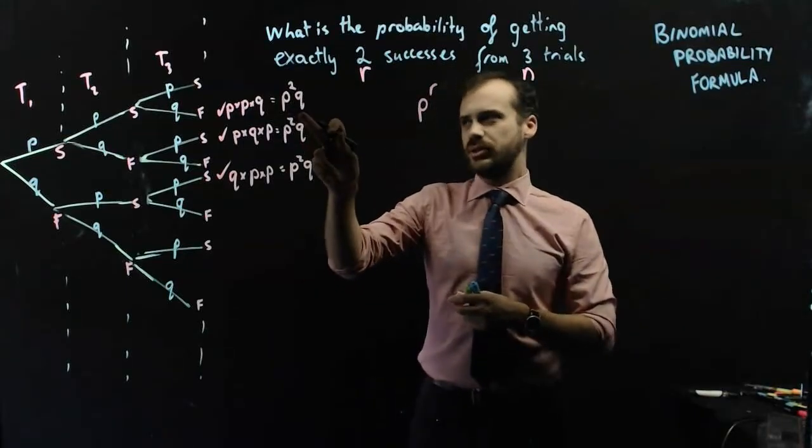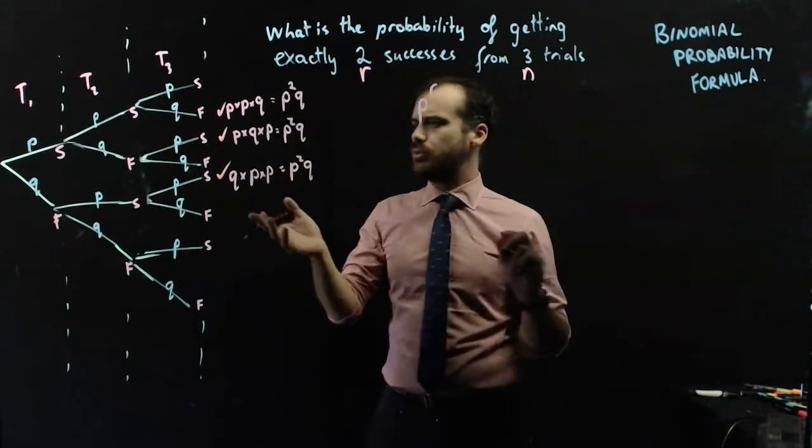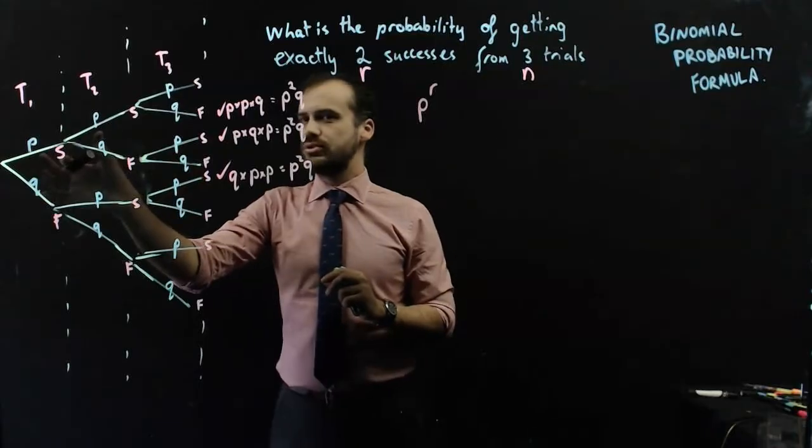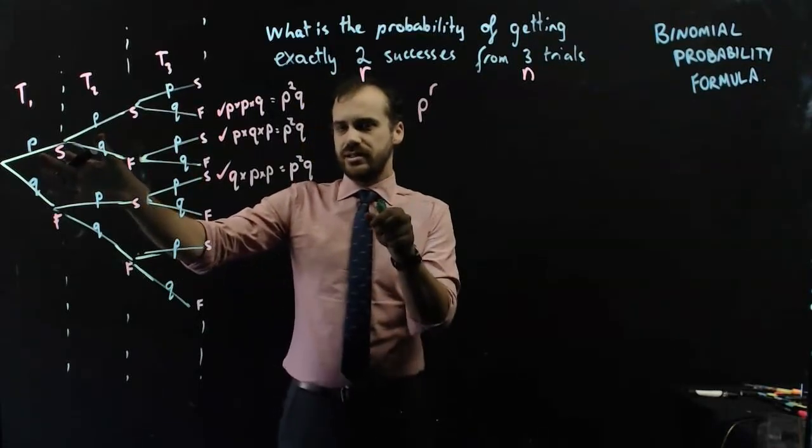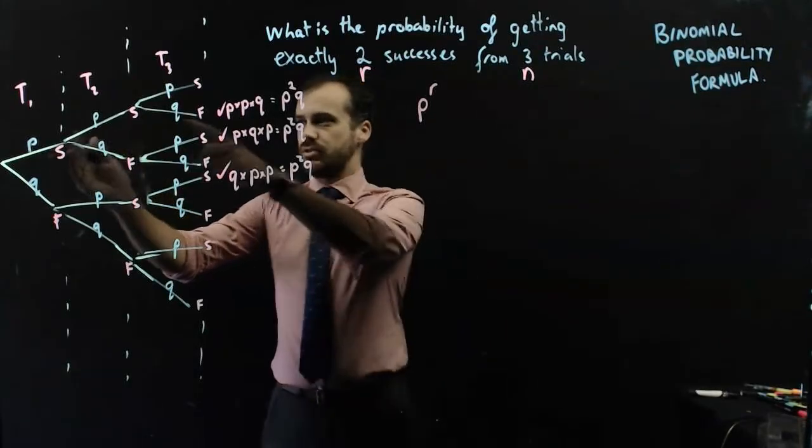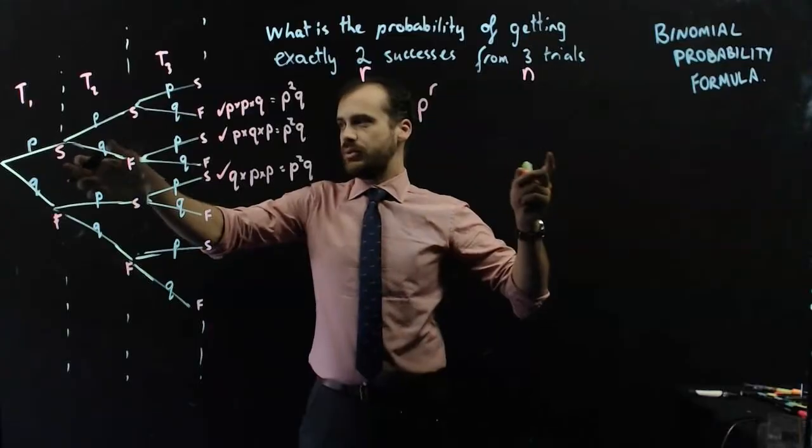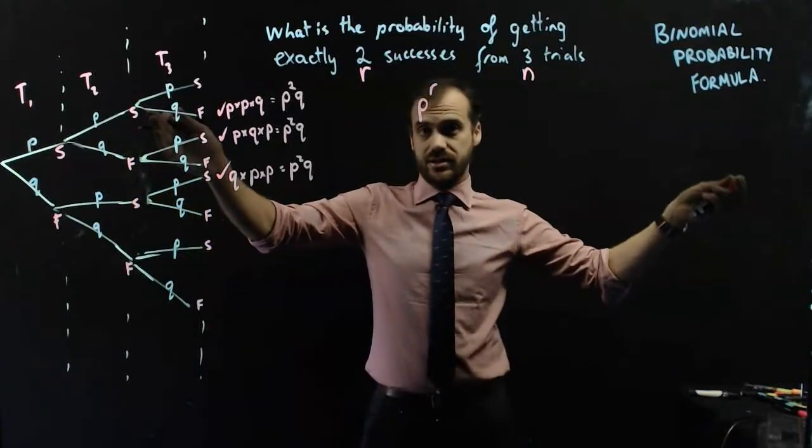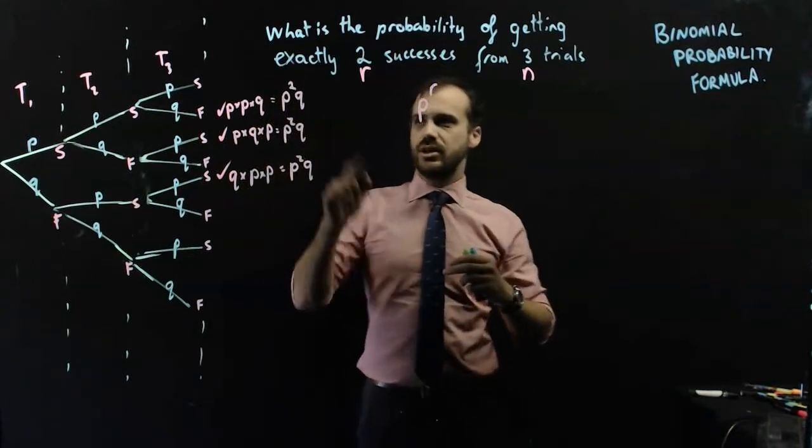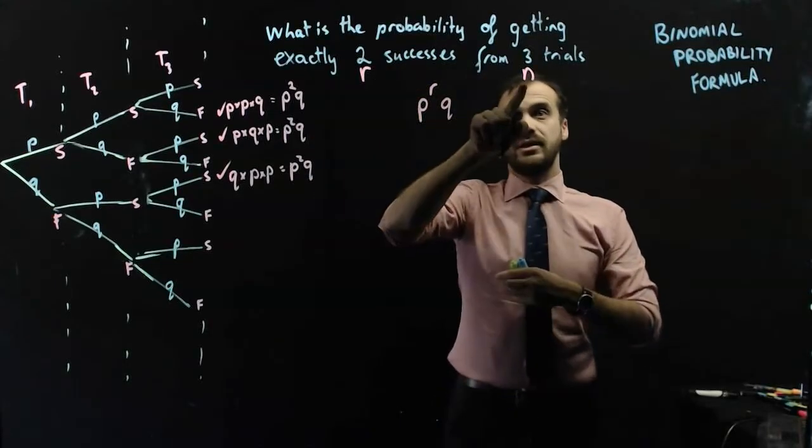Now what about Q? Well I've only got one Q, one failure here. But where did the number 1 come from? I can't see the number 1. Well, think about it. We've got three trials, three trials, and two successes. The number of failures is going to be whatever that number is, whatever R is, minus the total number of trials. If we had 10 trials and we only wanted two successes, we would be having two successes and eight failures. The probability of that happening would be P squared Q to the power of eight, and 10 trials. So, that Q is not just Q, it's Q to the power of N minus R.